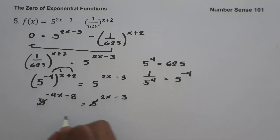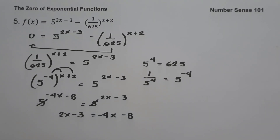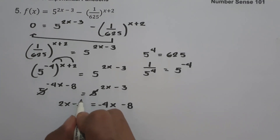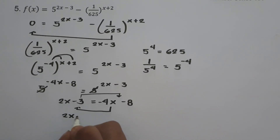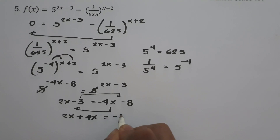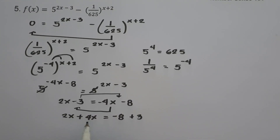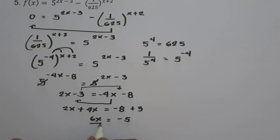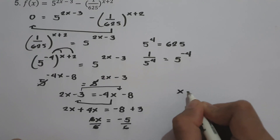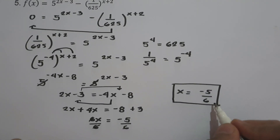Since we have the same base, cancel the base and set 2x minus 3 = negative 4x minus 8. Moving terms: 2x plus 4x = negative 8 plus 3, giving 6x = negative 5. Dividing both sides by 6, x = negative 5/6. So the zero of f(x) is negative 5/6, meaning the graph touches the x-axis at x = negative 5/6.